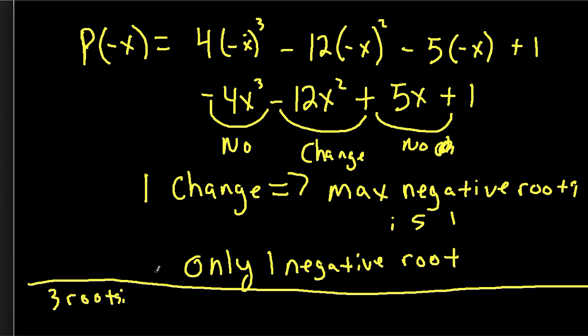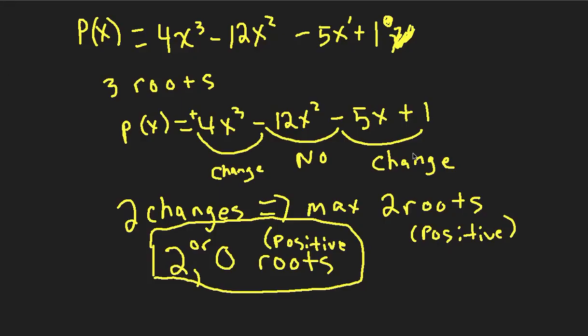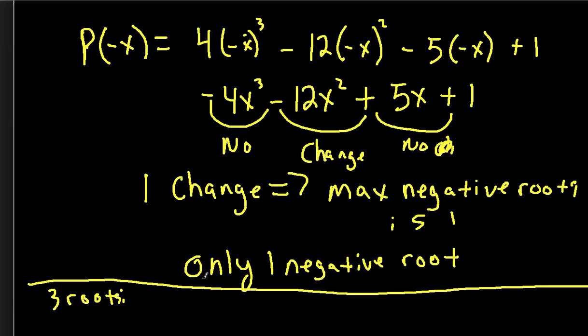Our first condition was, let's assume that there's 2 positive roots. If there's 2 positive roots, we know from this example here that there's 1 negative root. So we know that there's 2 positive, 1 negative.